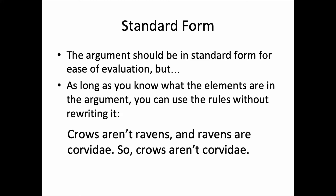Let's look at an example. Crows aren't ravens, and ravens are corvidae, so crows aren't corvidae. Obviously, the argument isn't in standard form. If it makes it easier to work on the argument — to figure out the parts, in order to draw a Venn diagram or apply the rules of the syllogism — it would make sense to rewrite it. But if you know the elements without rewriting it, you can get to work. The conclusion is 'crows aren't corvidae,' which is a universal negative sentence, so we can identify the minor and major terms and understand distribution.